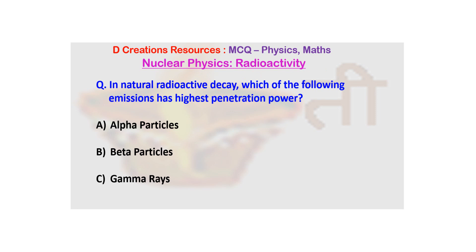Today let us tackle one more question. The question is in natural radioactive decay, which of the following emissions has highest penetration power? And the options given are A. Alpha particles, B. Beta particles and C. Gamma rays.